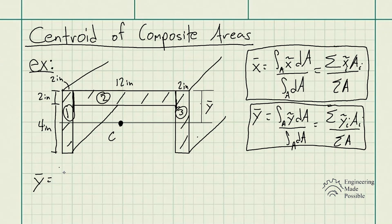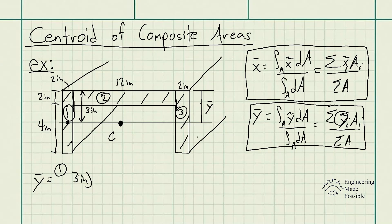For composite area number one, the centroid or Y-bar of this specific area will be right at its center. This rectangle has a length of six inches, so it's going to be three inches from the top. So three inches is our Y-bar for this specific area. That gives us three inches times the area of rectangle one, which is six inches times two inches, equaling 12 square inches.